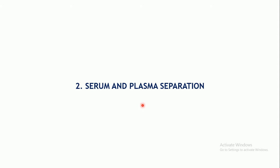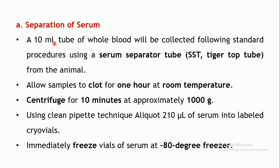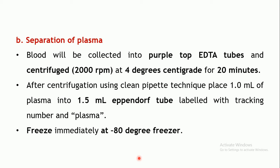The next technique is serum and plasma separation. For serum separation, 10 ml of whole blood is collected in a serum separator tube (also known as a tiger top tube). The blood is allowed to clot for one hour at room temperature, then centrifuged for 10 minutes at approximately 1000 g. An aliquot of 210 microliters of serum is collected in cryo vials and immediately frozen at minus 80 degrees.